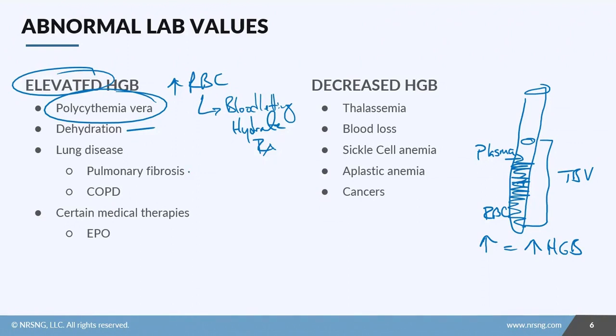Think about lung disease. Lung disease means you have an increased need for O2, an increased need for RBCs, so you could see some mild elevations with lung disease like pulmonary fibrosis or COPD. Other medical therapies like EPO—EPO is erythropoietin produced in the kidneys—so if your patient has chronic kidney disease, they may be on EPO supplementation, which will cause hemoglobin to be elevated.